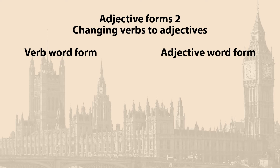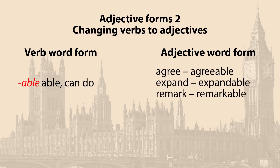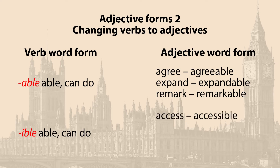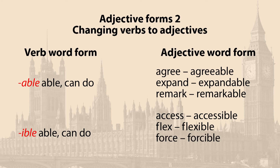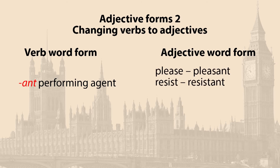Changing verbs to adjectives. Suffix '-able', meaning 'can do': agree → agreeable, expand → expandable, remark → remarkable. Suffix '-ible', meaning 'can do': access → accessible, flex → flexible, force → forcible, permit → permissible. Suffix '-ant/-ent', meaning 'performing agent': please → pleasant, resist → resistant, rely → reliant, vacate → vacant.